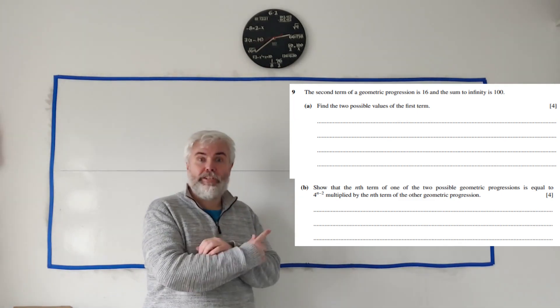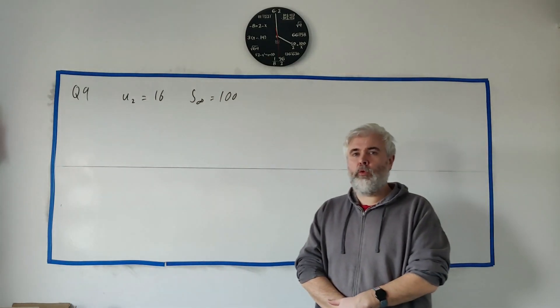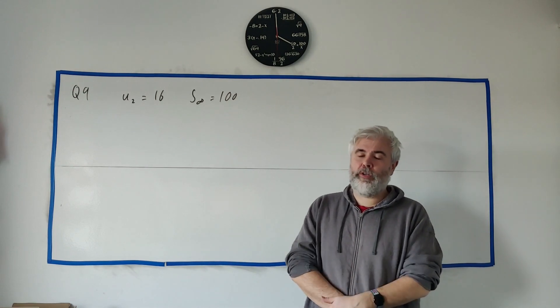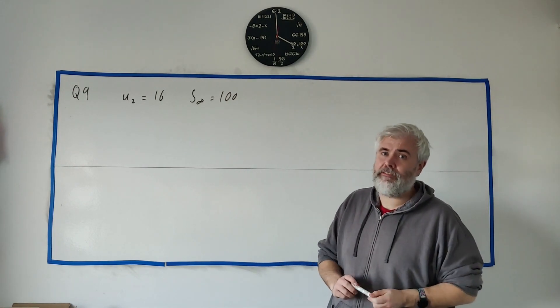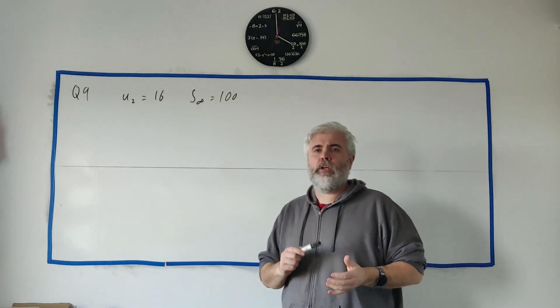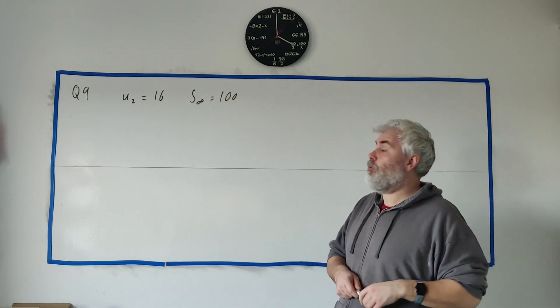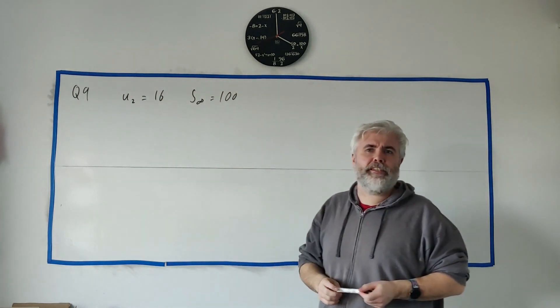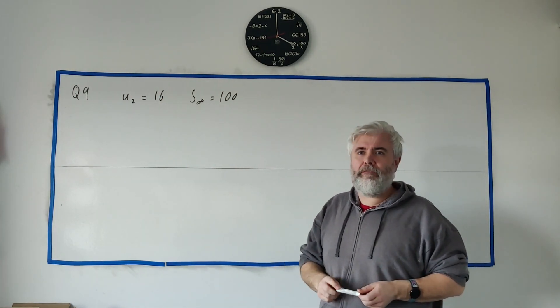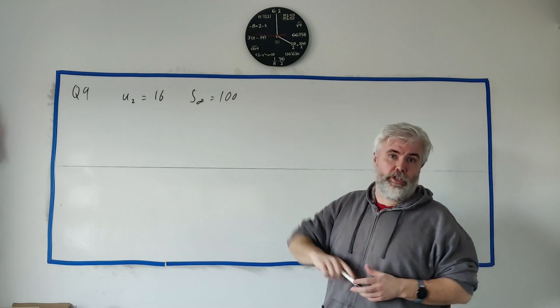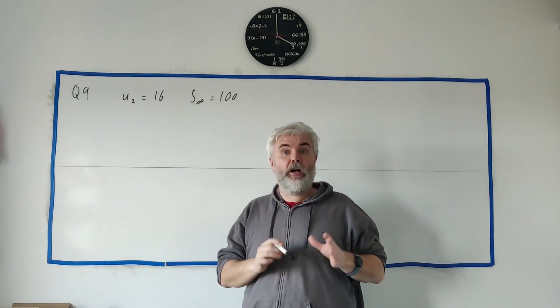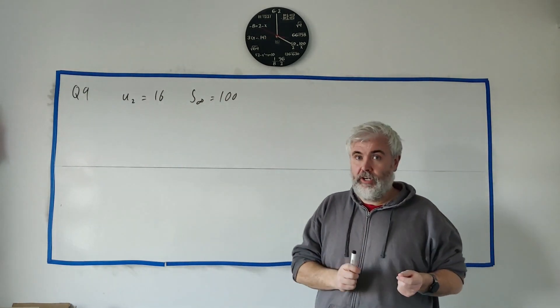Okay, let's get to this question. In question 9 we'll be dealing with geometric progressions and a bit of algebra. Question 9 starts off by telling you the second term of a geometric progression is 16, so U2 is 16, and the sum to infinity is 100. Find the two possible values for the first term.